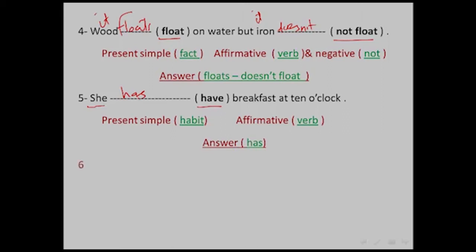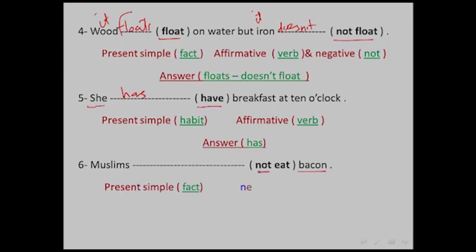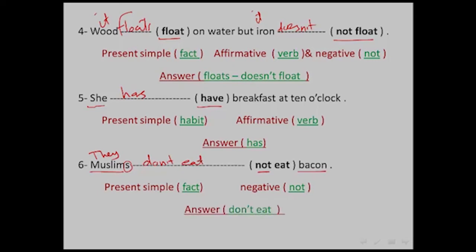Example six: 'Muslims not eat bacon.' This is Present Simple because it is a fact — according to Islamic rules we do not eat bacon. It is negative because of 'not'. 'Muslims' refers to 'they', so in negative we add 'don't' + verb. Answer: 'Muslims don't eat bacon.'